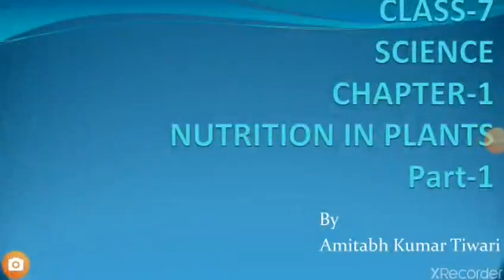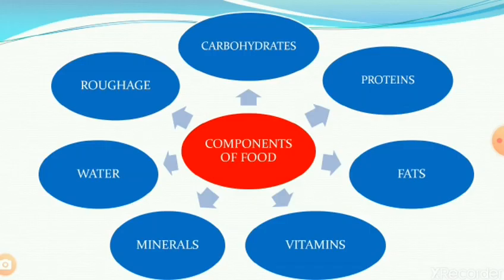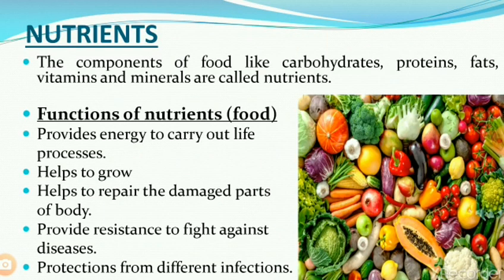Hello children, today we are going to learn Chapter 1: Nutrition and Plants, Part 1. Do you remember the different components of food which you learned in Class 6? These components are carbohydrates, proteins, fats, vitamins, minerals, water, and roughage. The components of food like carbohydrates, proteins, fats, vitamins, and minerals are also called nutrients.